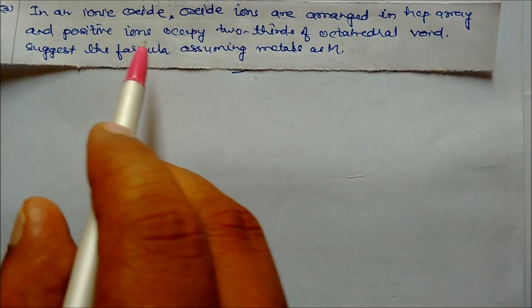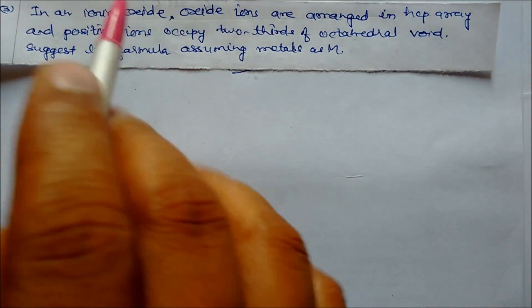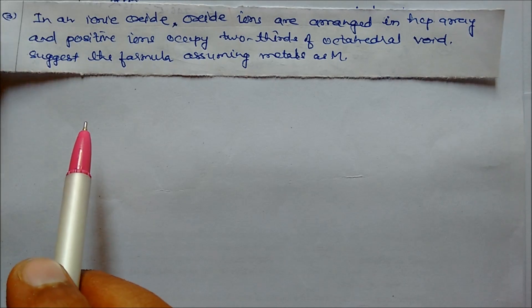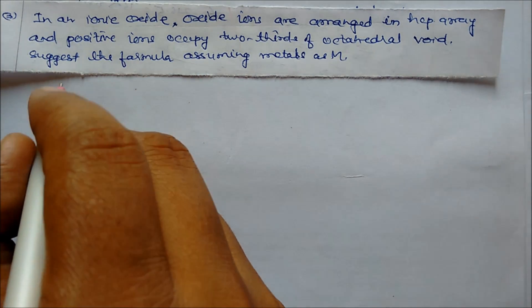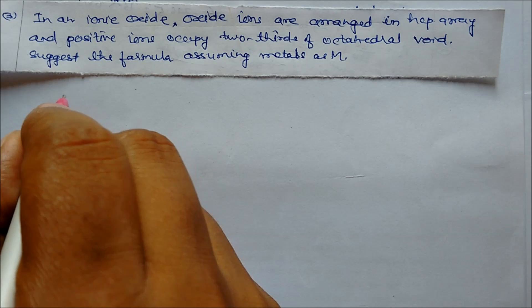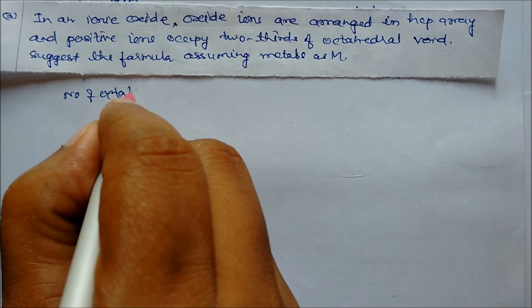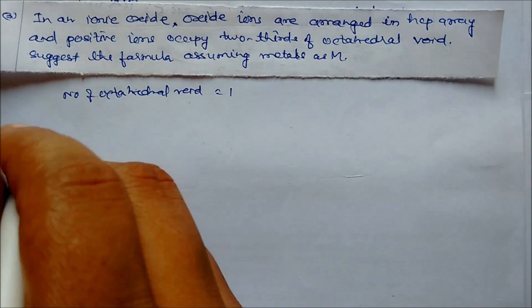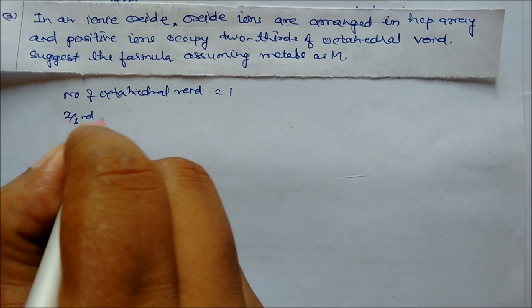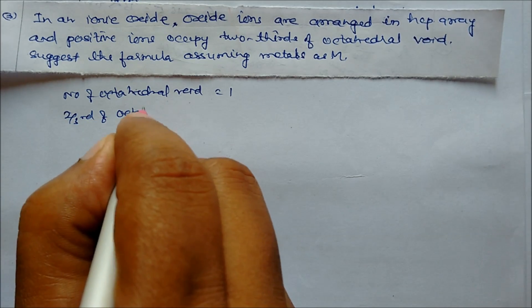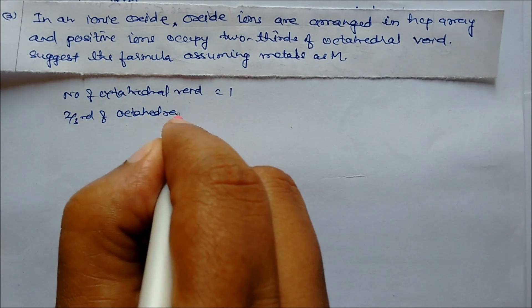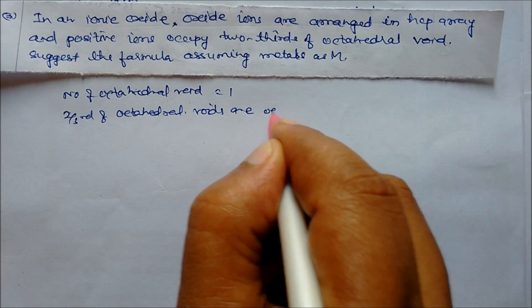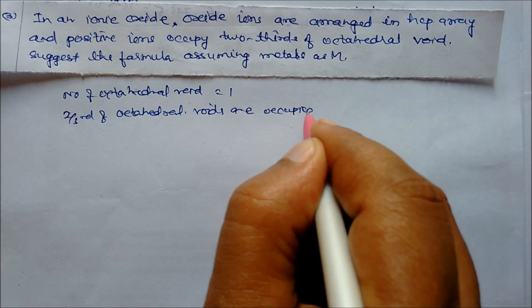Next problem: In an ionic oxide, oxide ions are in an HCP array and positive ions occupy two-thirds of the octahedral voids. Find the formula. Here, the number of octahedral voids is 1 per oxide ion, and two-thirds of those octahedral voids are occupied by the metal ion.